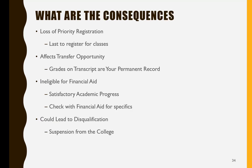Being on probation is a serious matter and there are major consequences associated with probation status. You will lose priority registration, which means you will be in the last group to register for classes. Your transfer opportunities will be affected, as the grades on your transcript are part of your permanent record. You may become ineligible for financial aid, as you are not making satisfactory progress. And being on probation could lead to disqualification, and as a result, you will be suspended from the college.